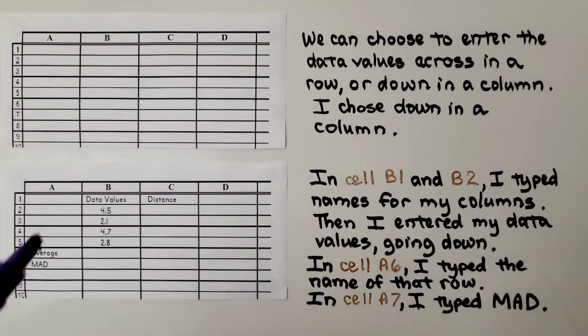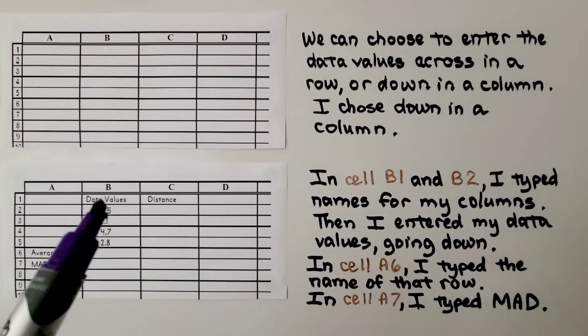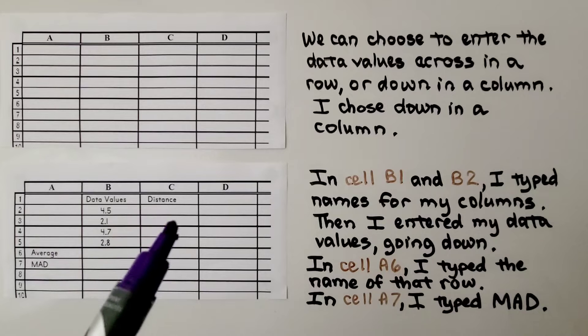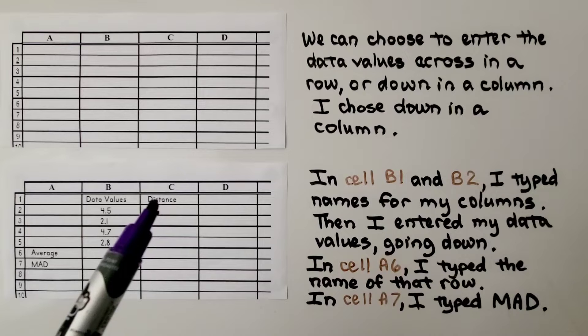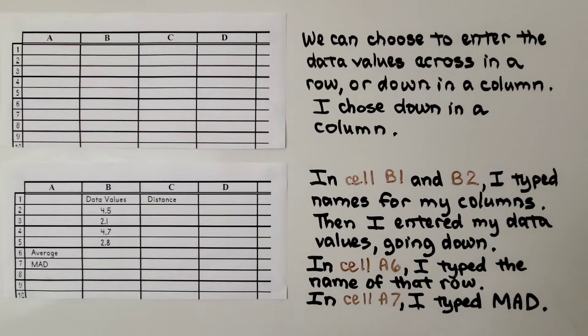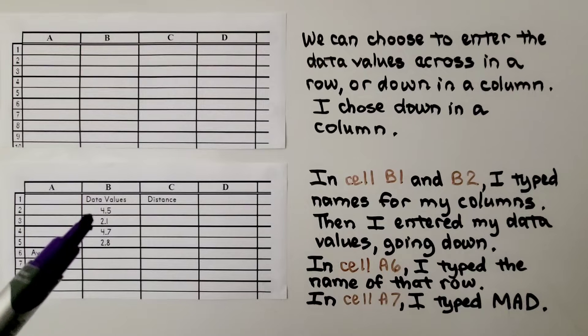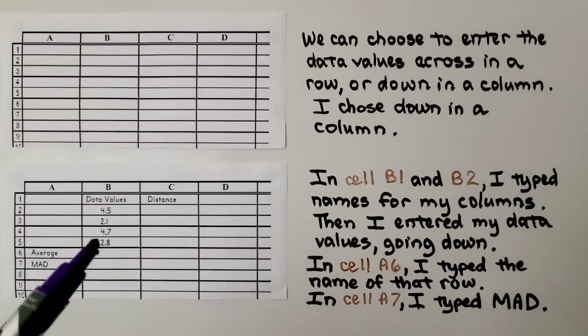And in cell B1 and B2, I typed names for my columns. I named this one data values and this one distance. Then I entered my data values going down. So here's the first value, the second value, the third value, and the fourth value.